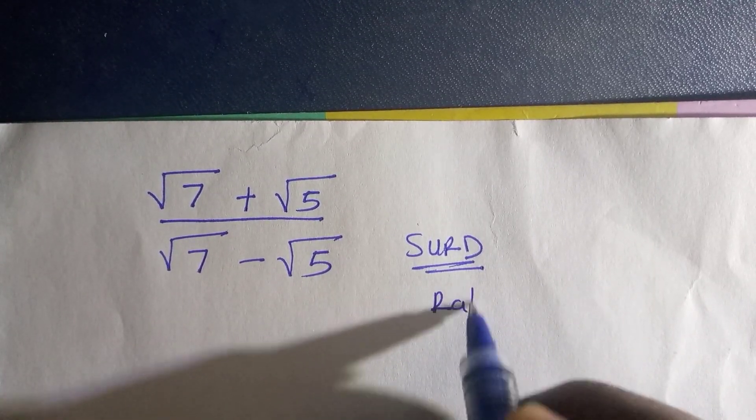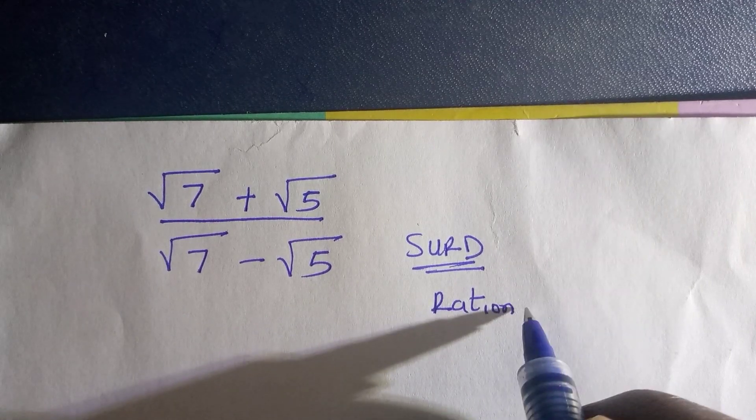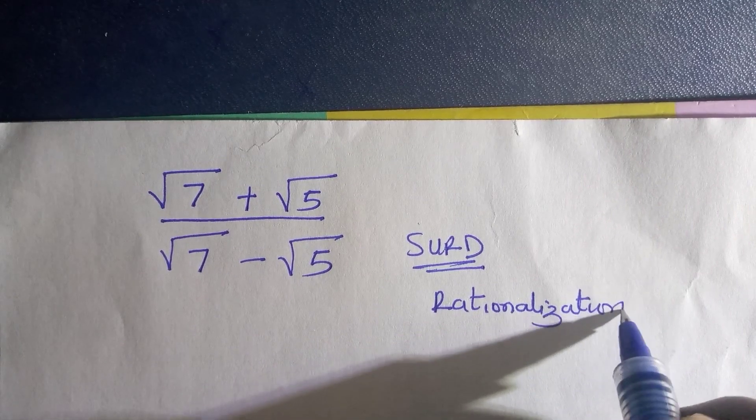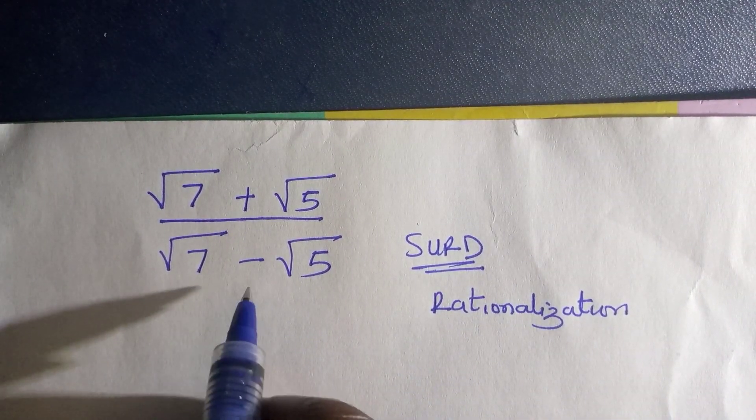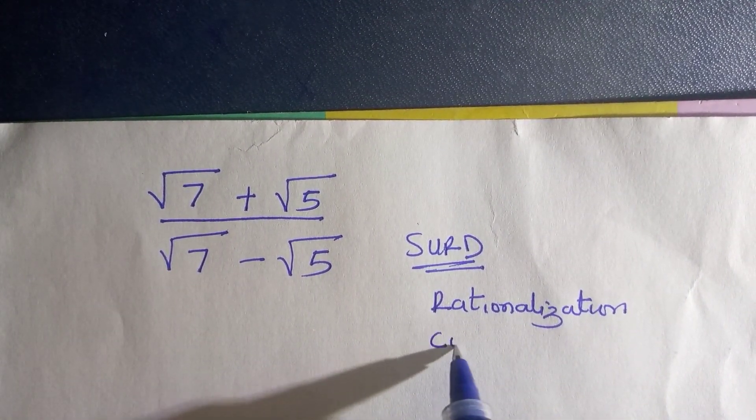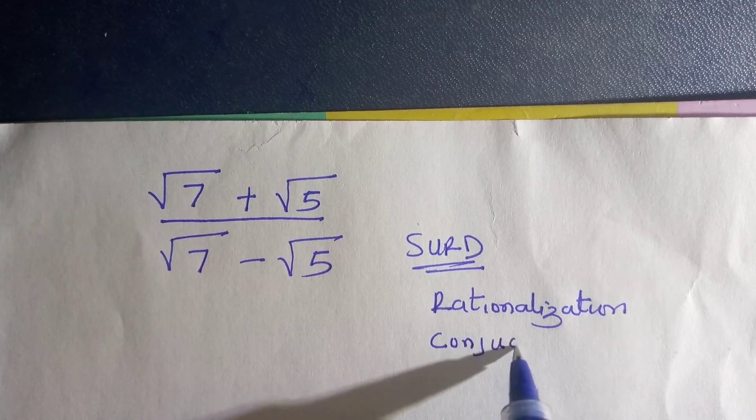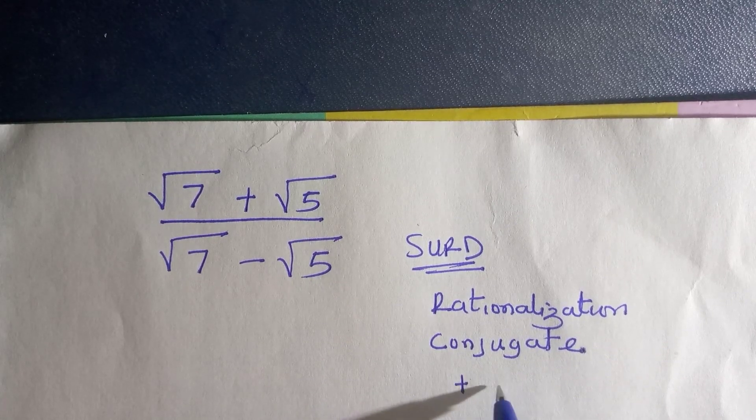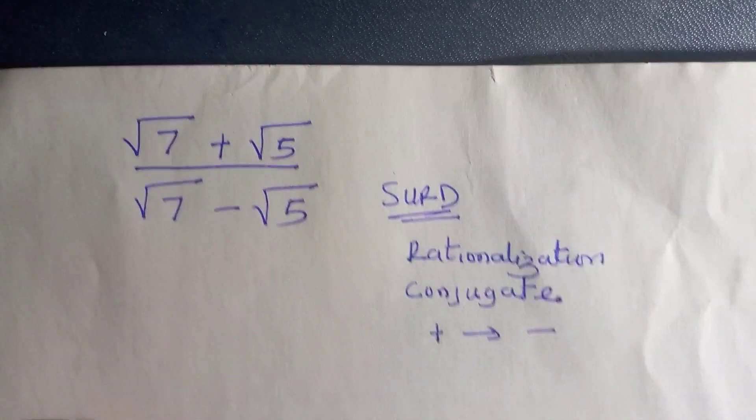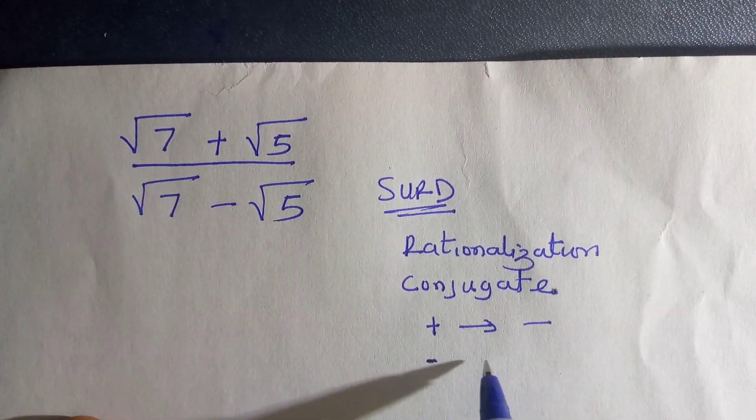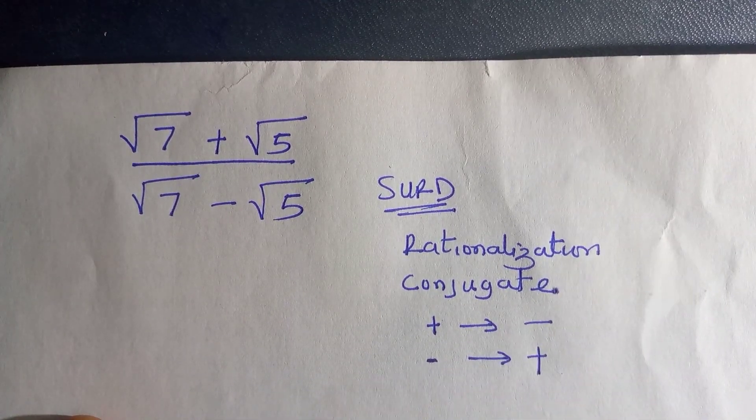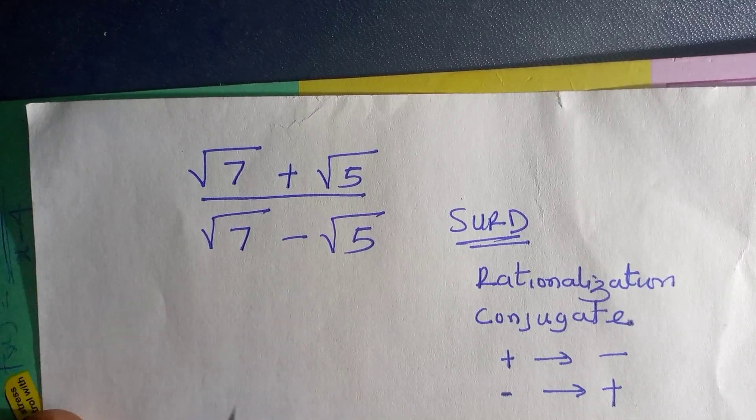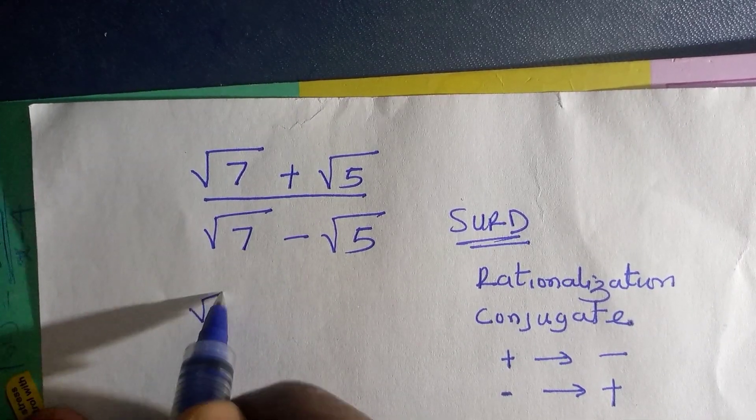We're going to rationalize the denominator using conjugates. When we rationalize, we take the conjugate, which represents changing the sign - negative to positive or positive to negative. During the process of rationalization, we change the sign.